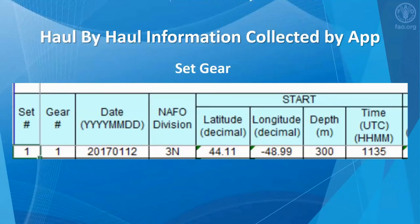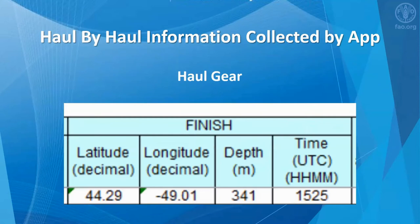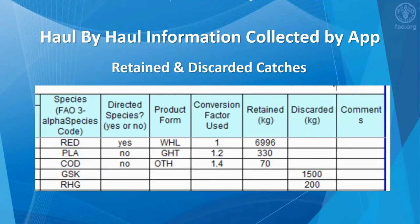The next three slides will briefly describe the main information recorded by the app. Every time the fishing gear is set in the ocean, the observer logs where, when, and what gear was used. When the fishing gear is hauled on board the fishing vessel, the time and location is recorded. Most importantly, for each haul, the weight of retained and discarded species is recorded.